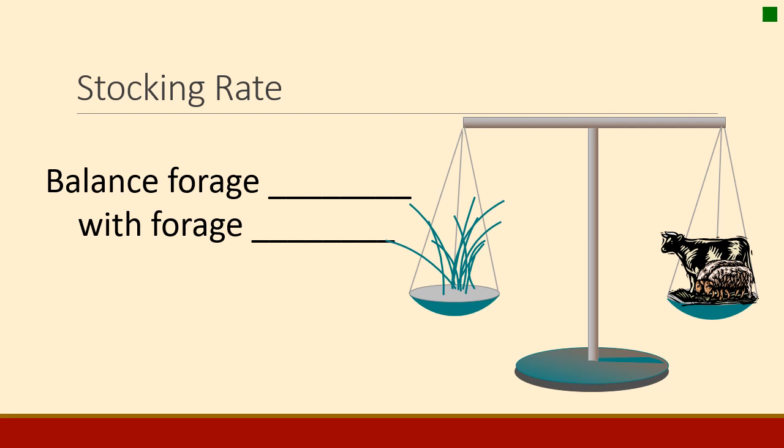Stocking rate is a very important decision that we make on rangelands. When you get to the heart of it, it's a balance between two things: forage supply and forage demand. The supply is provided by the forage out on the range, and the demand is that which is eaten by the livestock. So we're going to talk about managing that supply and demand.